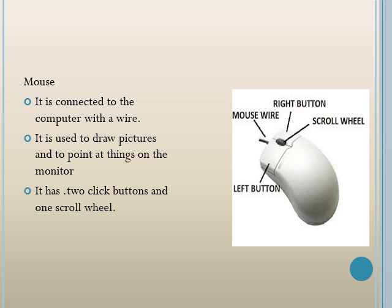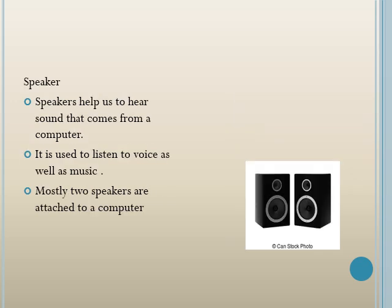The mouse is connected to the computer with a wire. It has basically three buttons: a left button, a right button, and one scroll wheel. It is used for drawing pictures and to point at things on the monitor.